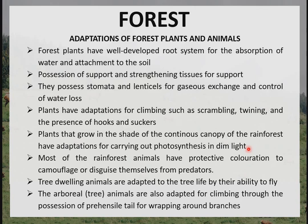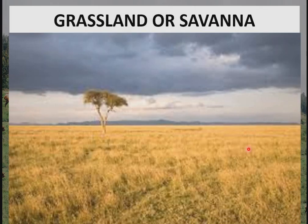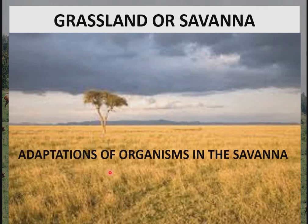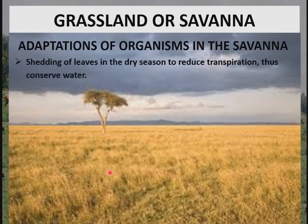The third habitat is the grassland, another name for which is savannah. A grassland is a plant community in which species of grasses are dominant. If you look at this area, you see that the dominant organisms are species of grasses. You only see scanty shrubs and trees in small quantities, while the dominant ones are always the grasses.